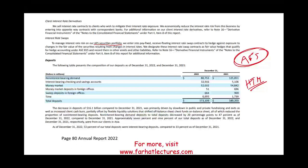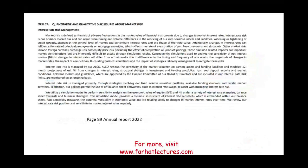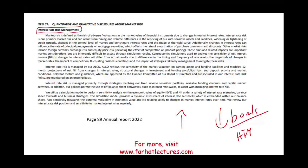They did not hedge the HTM bonds because they were not thinking they would need to sell them. Management was mismanaging the bank — they didn't properly invest their money. Why would they put everything in HTM? Were they trying to hide their losses? Many of their executives sold their stocks beforehand. The question is whether that issue was raised between the auditor and management — if it was, it should definitely be a CAM.